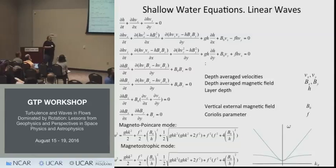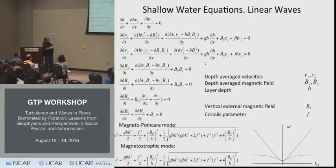If you linearize these equations, you obtain the magneto-Poincaré carrier mode — these are gravitational or magneto-gravitational waves — and a magnetostrophic mode. This magnetostrophic mode does not exist in the traditional shallow water MHD approximation.